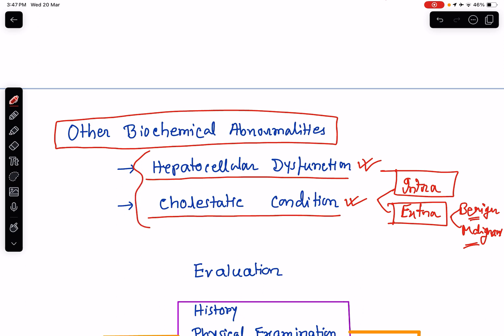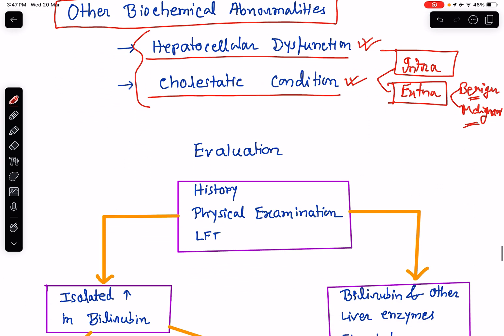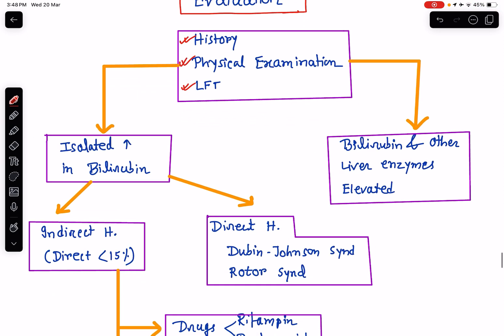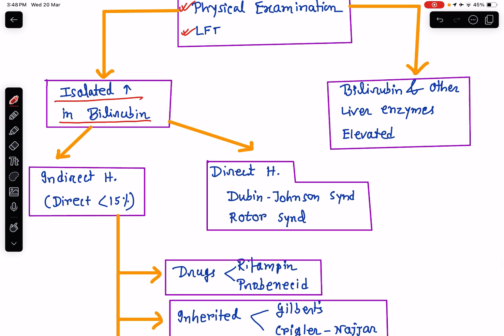So not going into the detail of all causes, these are the causes of hepatocellular dysfunction and cholestatic conditions leading to hyperbilirubinemia. Now the most important part of this class — evaluation of a case of hyperbilirubinemia. Once a patient has come to you with jaundice or icterus, take a good history; don't forget about medication or drug use. Do a thorough physical examination, then do a liver function test. In the liver function test, if there is isolated increase in serum bilirubin, you can divide the condition into indirect hyperbilirubinemia and direct hyperbilirubinemia.